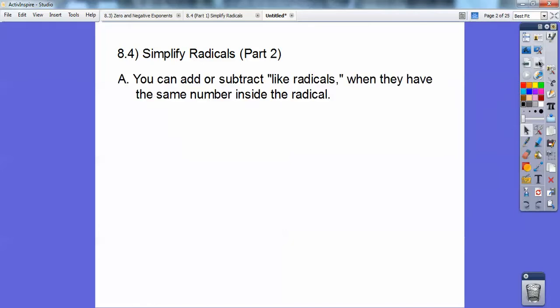To add or subtract like radicals, you can do that when they have the same number inside the radical. So for example, here's the first one. Simplify 5√2 + 7√2 - 3√2. They all have a √2, so we just add these numbers out in front. 5 + 7 is 12, 12 - 3 is 9, so we have 9√2.